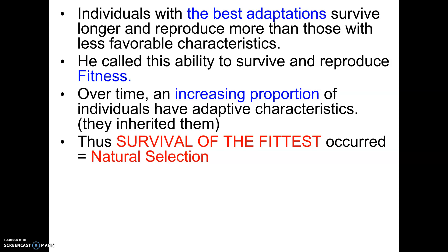Natural selection is not the only cause of evolution — there are all kinds of other things. Mutations: if a mutation happens, a new trait may appear in a population. If there's migration, new organisms coming in or leaving changes who's around to mate with whom, causing evolution. If there's a natural disaster and organisms die, that causes changes too. However, the one thing that typically leads to changes that help an organism survive is natural selection, because natural selection specifically leads to organisms having adaptations that help them survive in their particular environment.